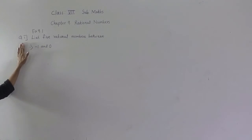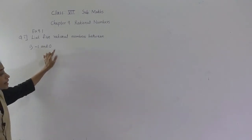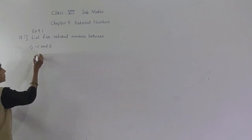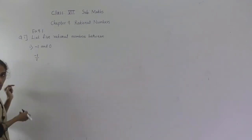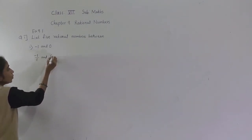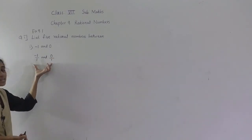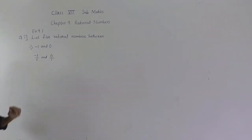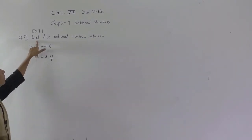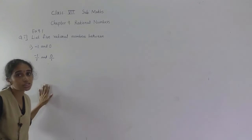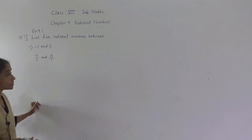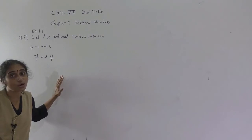Exercise 9.1, Question 1: List 5 rational numbers between minus 1 and 0. These numbers have no written denominator, meaning denominator is 1. We need to find 5 rational numbers between them, so I will multiply by 6 for the denominator.